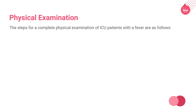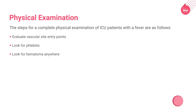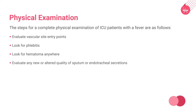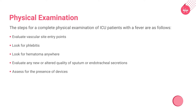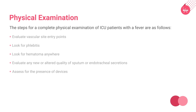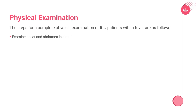A complete physical examination should be performed looking for common and serious causes of fever. The clinician should evaluate vascular site entry points and look for phlebitis or hematoma. Evaluate any new or altered sputum or endotracheal secretions and perform a lung examination for new pneumonia. Assess for the presence of devices, including intravascular catheters, urinary catheters, and chest and abdominal drains, and question whether diarrhea is present to suggest possible Clostridioides difficile infection. Perform a detailed chest and abdominal examination for tenderness or rigidity suggesting abscess, acalculous cholecystitis, pancreatitis, or mesenteric ischemia. Heart sounds should be listened to carefully for new murmurs to suggest endocarditis.